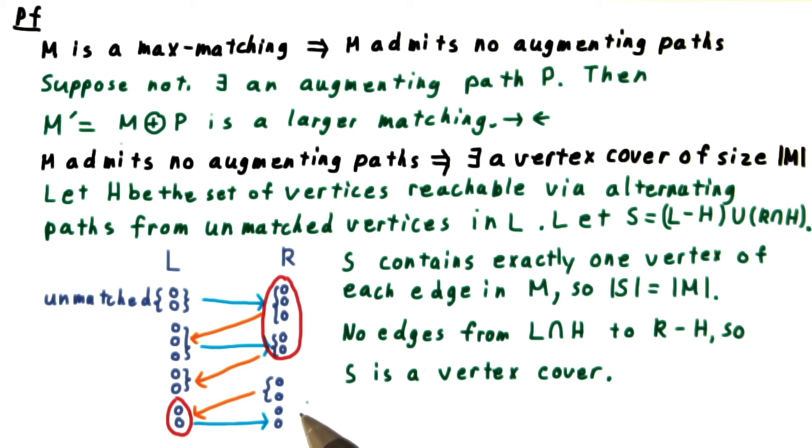So what we really need to worry about are just edges that go across the cut. Well, from here to here, both vertices in the edge are covered. So we only really need to worry about the part of L that is in H being one vertex, and the part of R that is not in H being the other. But if there were such an edge crossing here, it would have been in H, because we'd be going from a vertex in H via an unmatched edge to R. We conclude that there are no such edges, and hence S is a vertex cover.